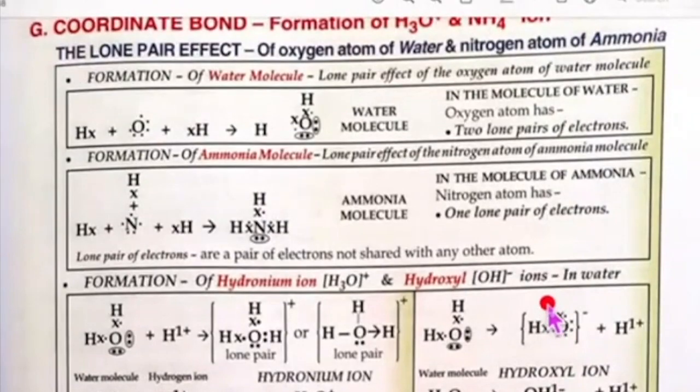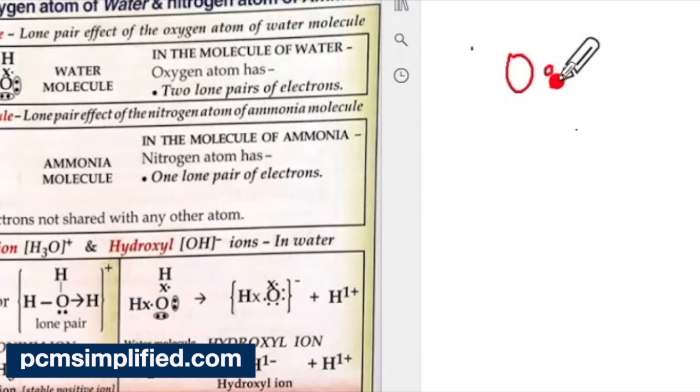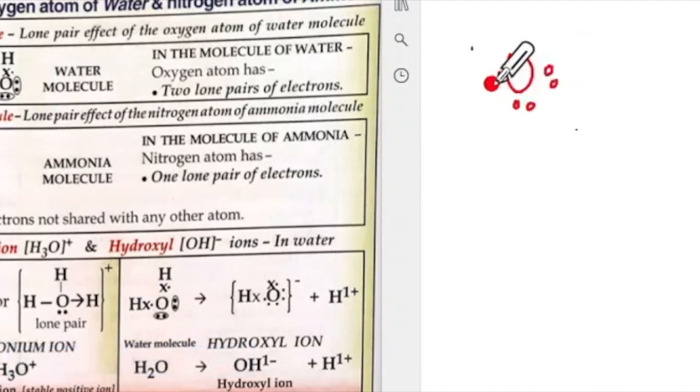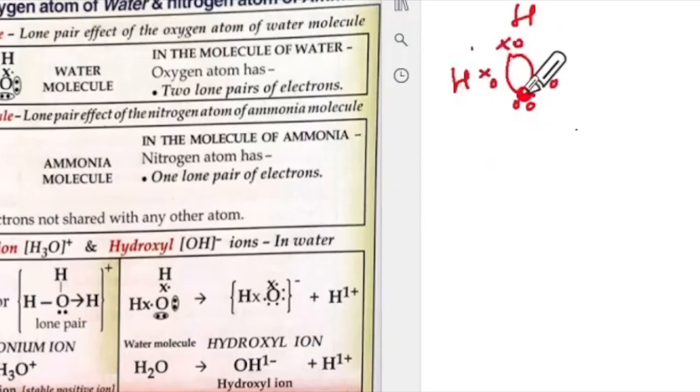Now we are coming to the lone pair effect, it's an important concept. See this is oxygen: one, two, three, four, five, six. So then you have this one here and this one here. What are these? These are the lone pairs, these are two lone pairs.